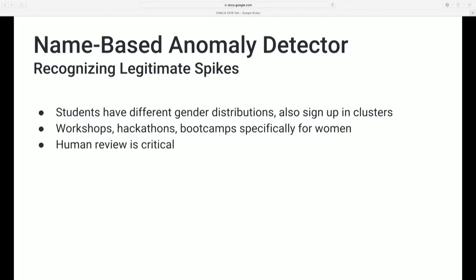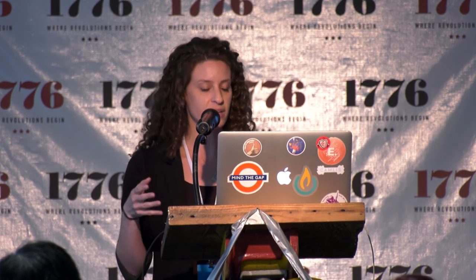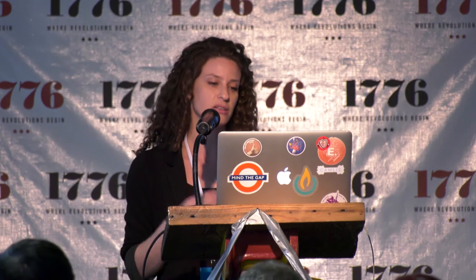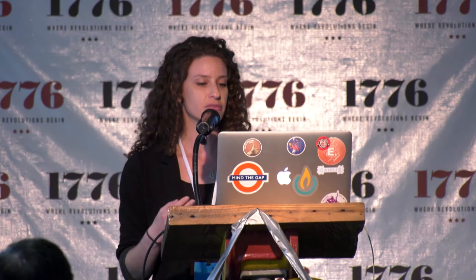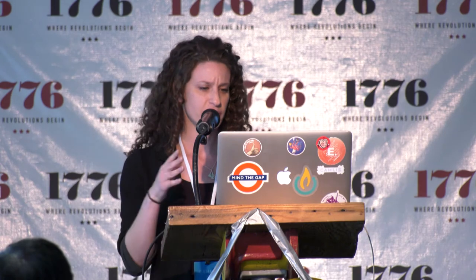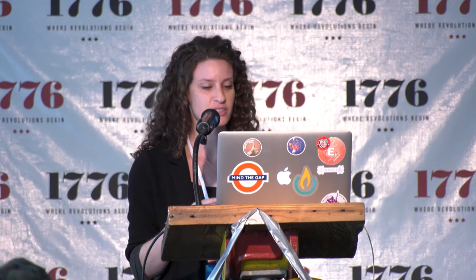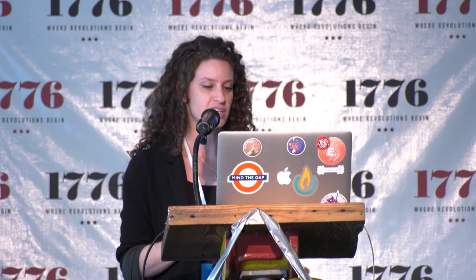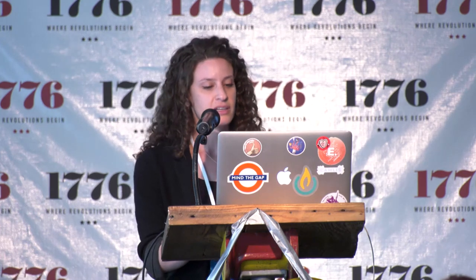A key part of the implementation is careful investigation to distinguish legitimate spikes from illegitimate behavior. For example, college and university students are more female on average than our general user base, and they tend to sign up in clusters. Similarly, there are workshops, hackathons, and dev boot camps for women that could also cause spikes in sign-ups with feminine names. The second-stage review by a human is really critical — the anomaly detector is a signal that something should be investigated, but alone it's not sufficient evidence for taking actual action. Over time you might automate some of this review, but given the nature of the signal, it would be safer to have humans looking at it anyway.